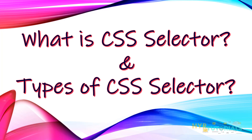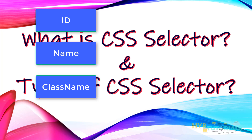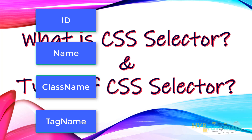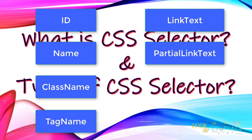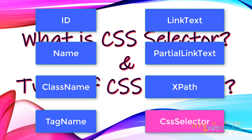Selenium provides us about 8 locators. Those are ID, name, class name, tag name, link text, partial link text, then XPath, and the last one is CSS selector. This CSS selector is also one of the locators among the 8 locators provided by Selenium.